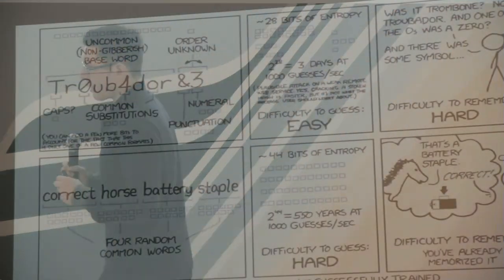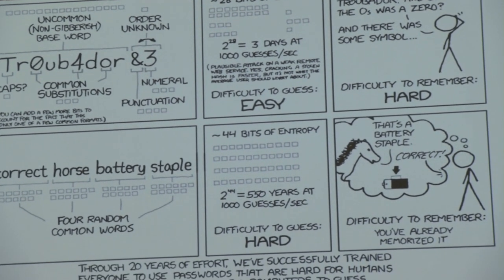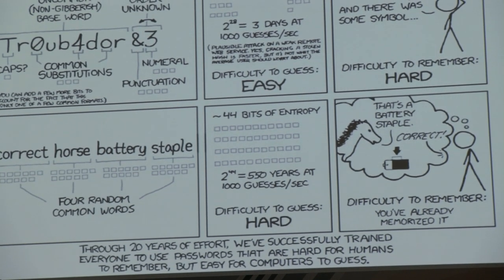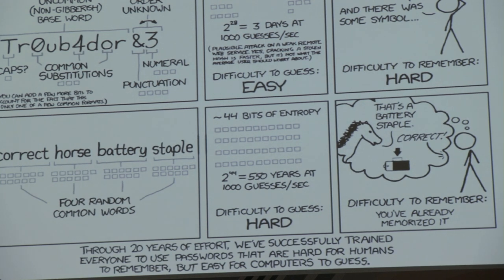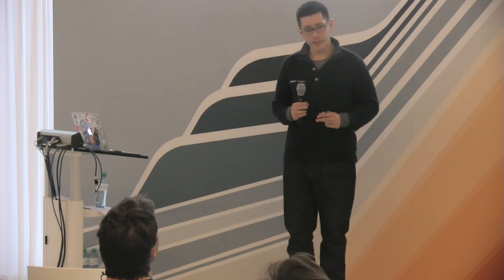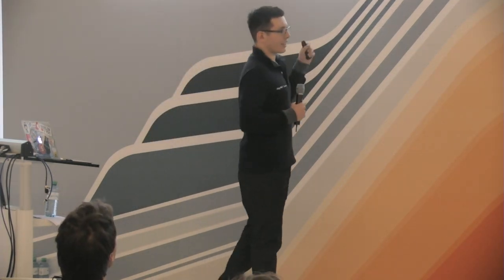There's a nice xkcd comic about password security. You know those rules: alphanumeric passwords with symbols, at least eight characters, something really random — and nobody can remember them. Applications like 1Password generate random things and remember them for you, protected by a master password. But the whole point of that comic is that 'correct horse battery staple' is actually a much more secure and memorable password than something like 'Tr0ub4dor&3'.